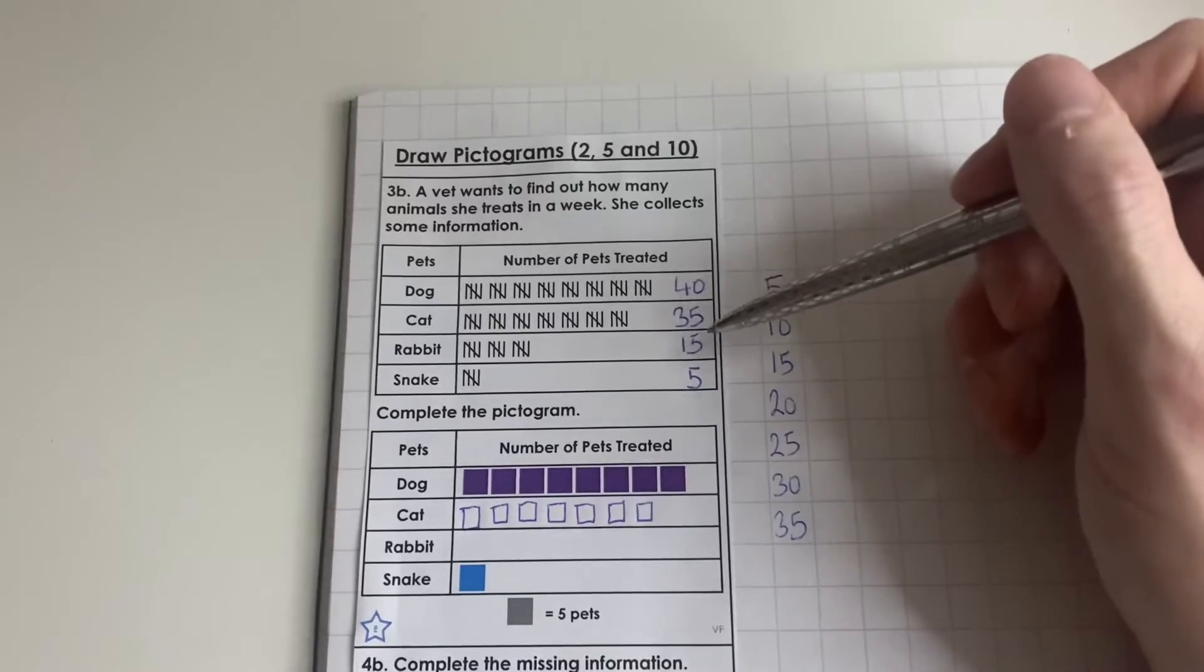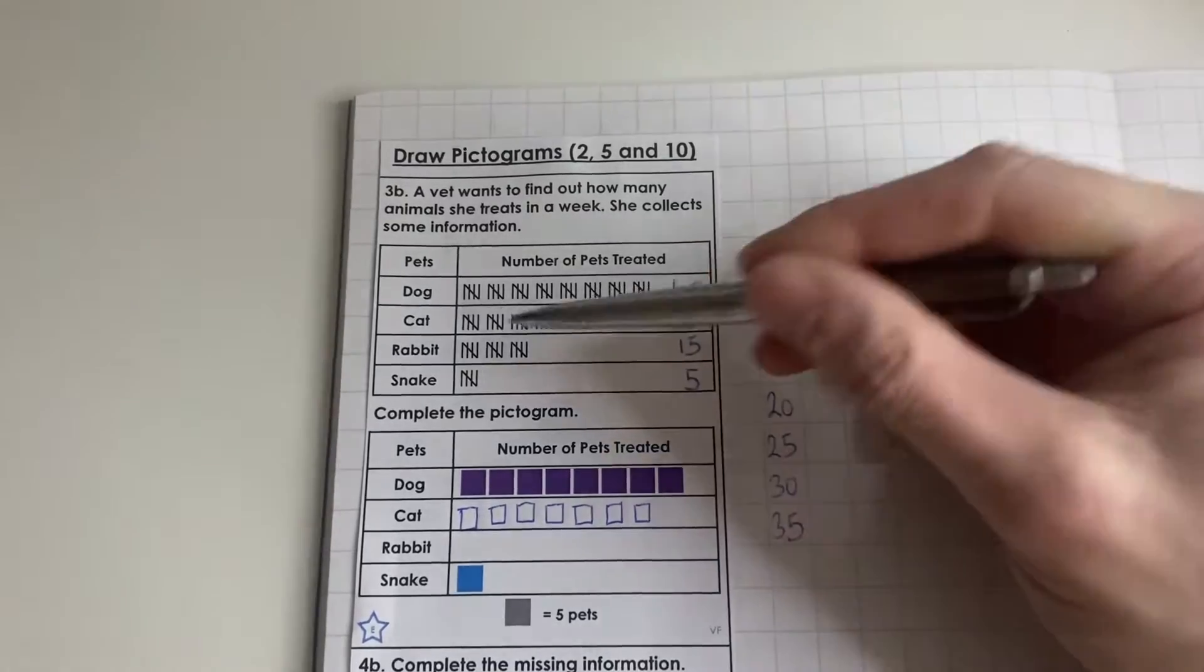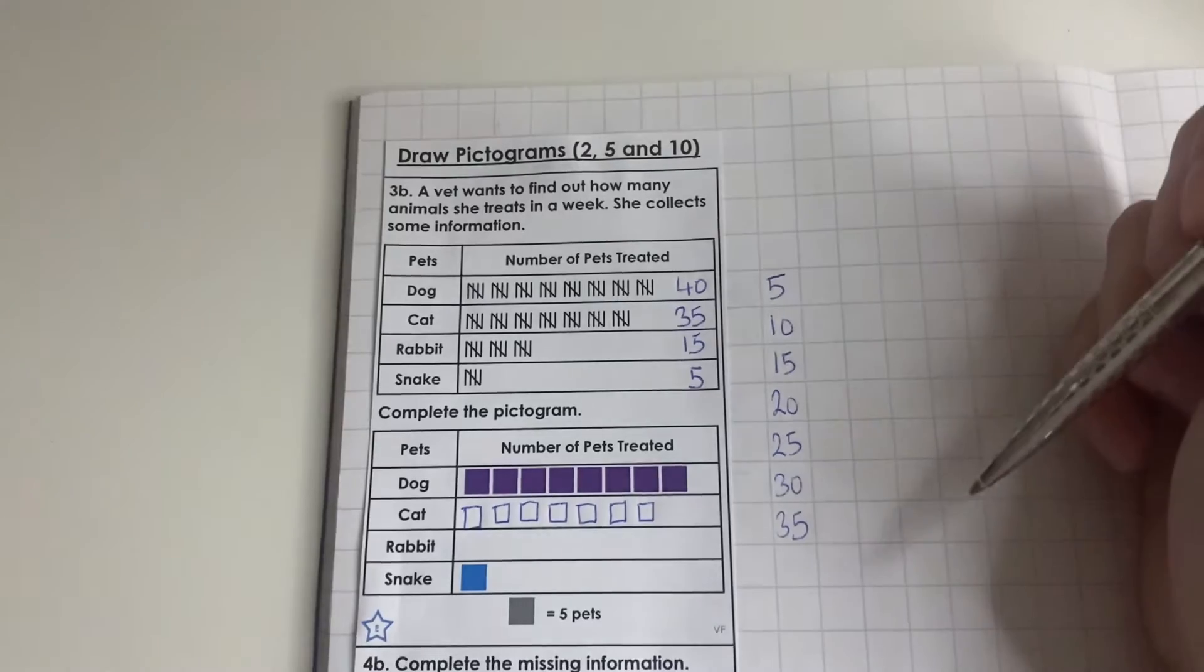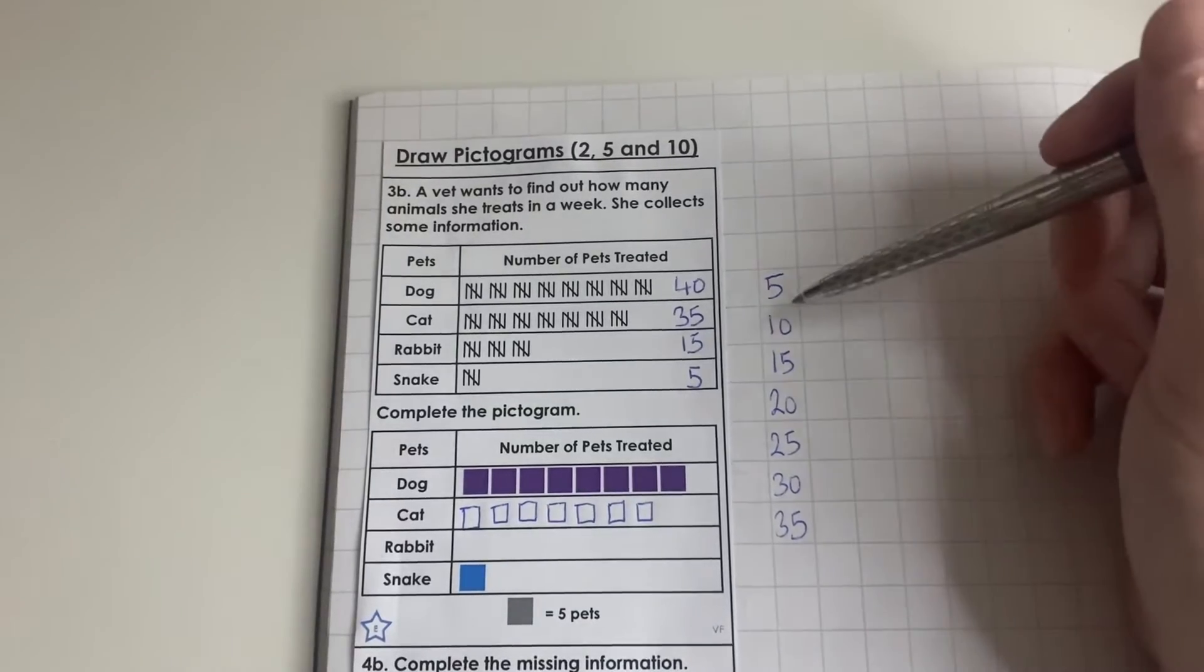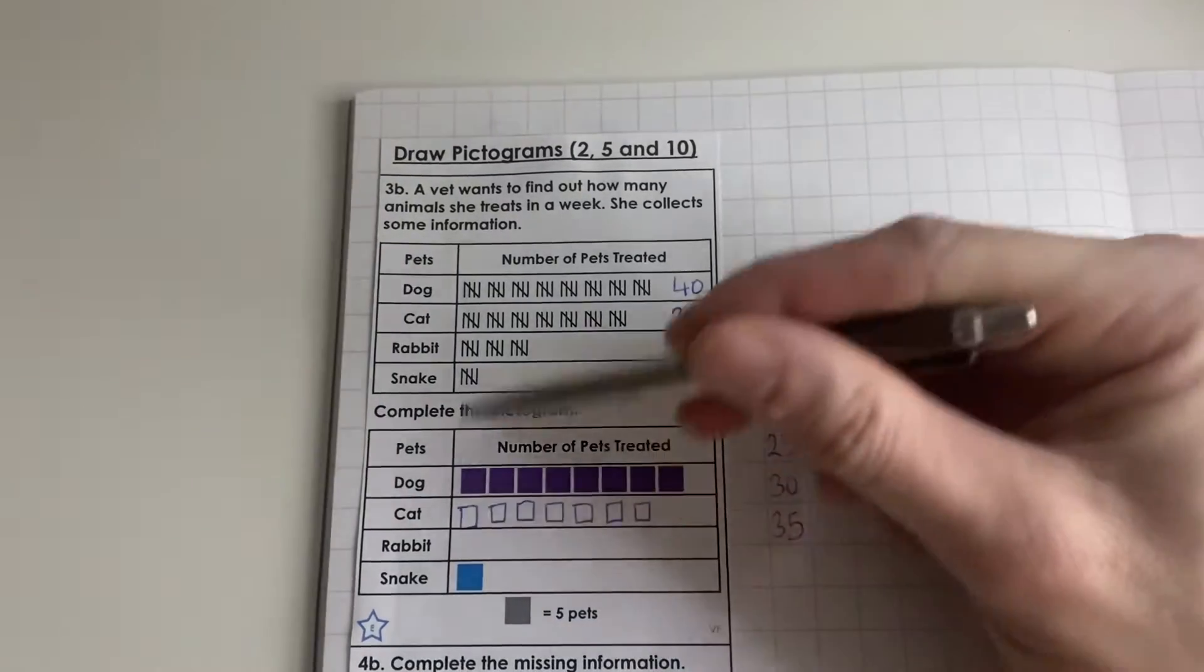Now we're going to look at rabbit. There were 15 rabbits treated: 1, 2, 3. So that means we have to draw 3 boxes for rabbit.